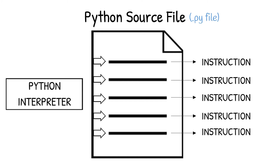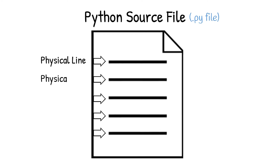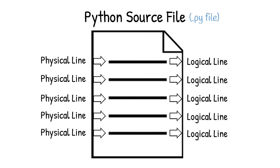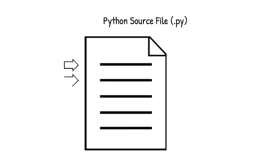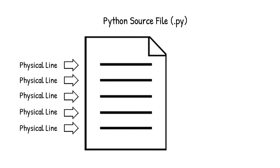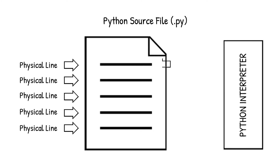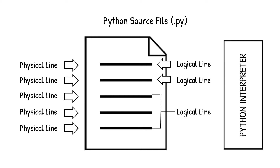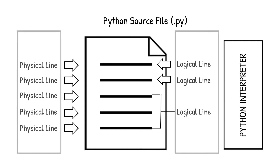The question is: how does the interpreter read the instructions from each line of code in the source file? The interpreter reads the instructions by converting each physical line into a logical line. A physical line is what you see as a single line in the Python source file. A logical line is what the Python interpreter sees as a single line — for example, there may be three physical lines that form a single logical line.